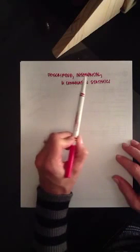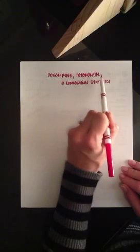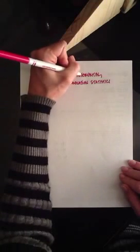In statistics, descriptive and inferential are the two big branches of statistics, and then correlation statistics are a subset of inferential statistics.